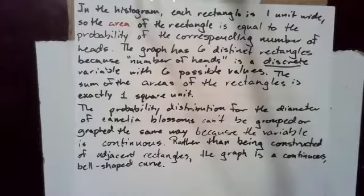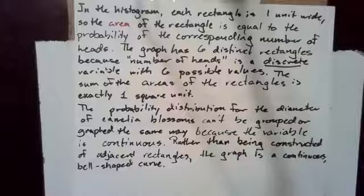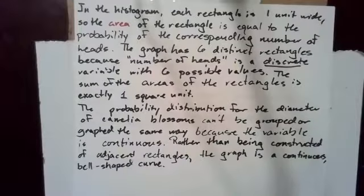The probability distribution for the diameter of camellia blossoms can't be grouped or graphed the same way because the variable is continuous. Rather than being constructed of adjacent rectangles, the graph is a continuous bell-shaped curve.